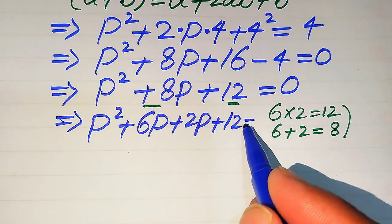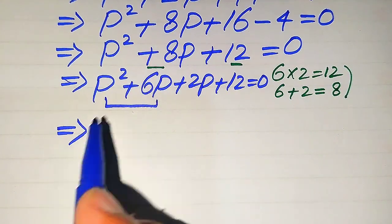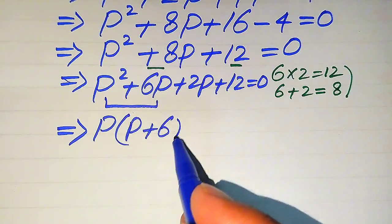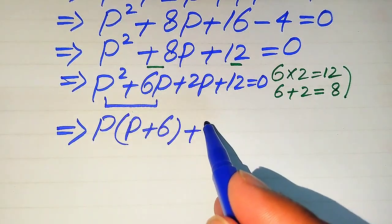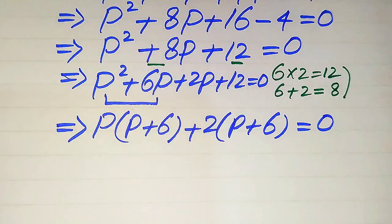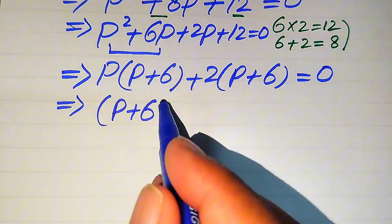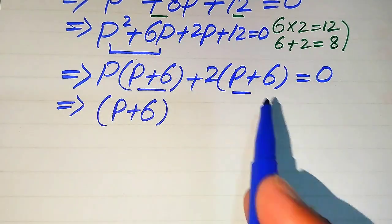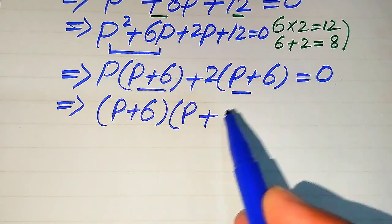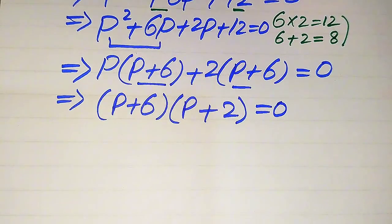We split 8p as 6p + 2p, giving us p² + 6p + 2p + 12 = 0. From the first two terms we take out common factor p, getting p(p + 6). From the last two terms we take out 2, getting 2(p + 6). Both terms now share the factor (p + 6), so we factor it out to get (p + 6)(p + 2) = 0.